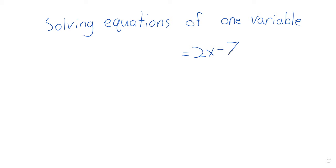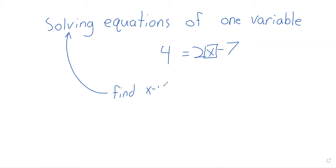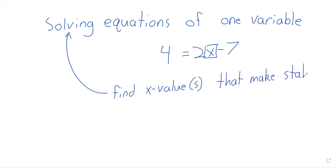If instead of that y we had a number, say 4 equals 2x minus 7, now this is an equation of one variable. When we talk about solving an equation, we want to find an x value — or values, because there can be more than one — that make the statement true. Because x is a variable, x can be anything.